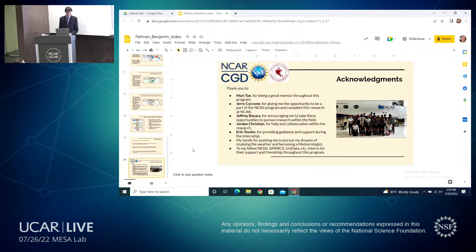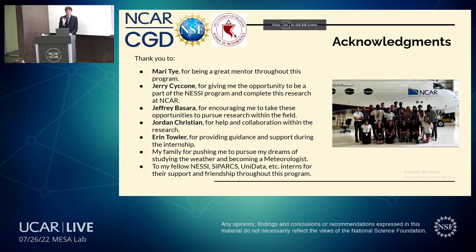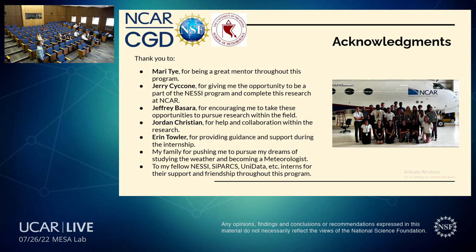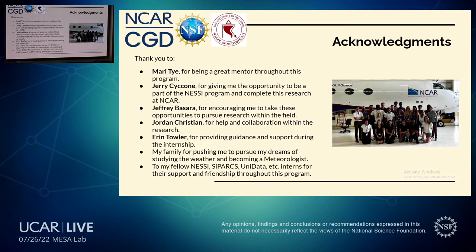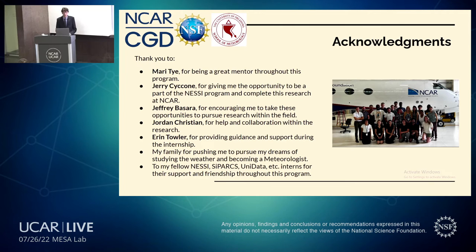Great job, Ben. Amazing presentation. In the future, would you be curious about looking at any other regions around the world, or just focus on the United States? Absolutely. There's actually a paper by Jordan Christian who worked with me on this project, investigating 15 different worldwide regions of flash drought occurrence, focused on those most impactful to human life, agriculture, and worldwide conditions. I think to begin with, it would be important to look at other regions of the United States — especially the southeast and east coast — and then hopefully expanding to other regions of the world.